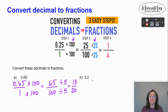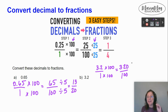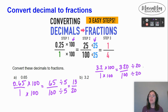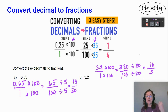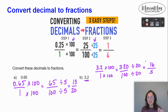Let's do it again with 3.2. Take 3.2, put it over 1. Then multiply the top and bottom by 100, giving me 320 over 100. Now divide the top by 20 and the bottom by 20. 320 divided by 20 gives you 16, and 100 divided by 20 gives you 5. You may notice there's a bigger number on top — that's called an improper fraction, and it's okay because 3.2 is bigger than 1. So 16 fifths is equivalent to 3.2.